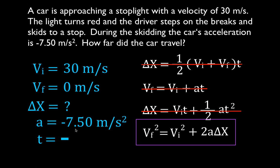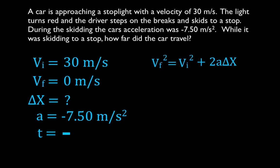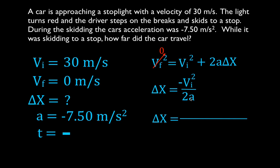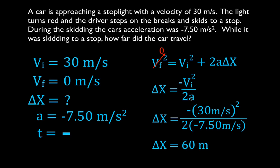Going to the next slide: the fourth equation has final velocity squared equals initial velocity squared plus 2a times delta x. The final velocity is 0, so final velocity squared is also 0. Solving for delta x, we subtract the initial velocity squared from both sides, then divide by 2a. Delta x equals negative initial velocity squared divided by 2 times acceleration: negative 30 squared divided by 2 times negative 7.5. The distance the car travels is 60 meters.